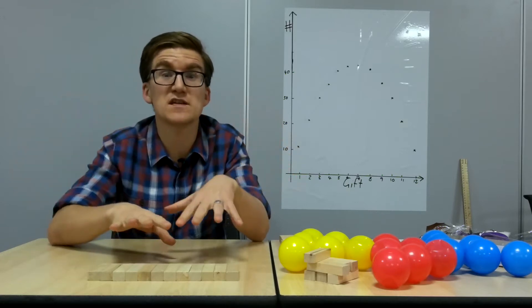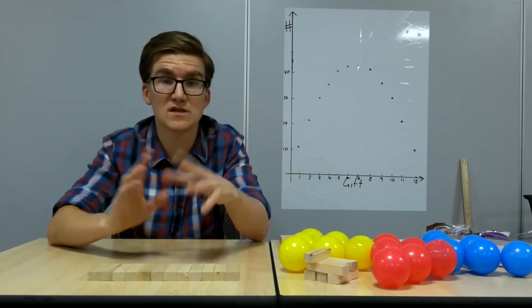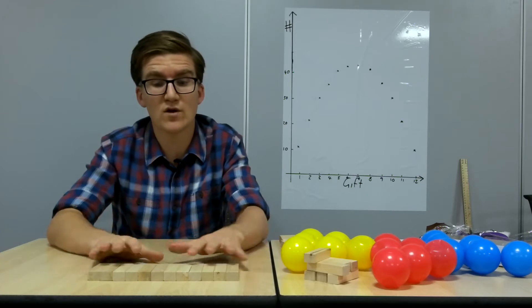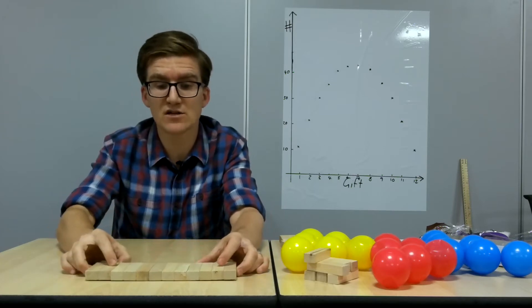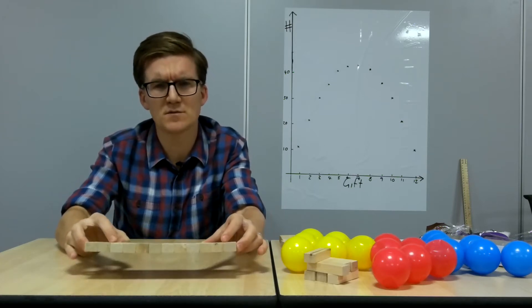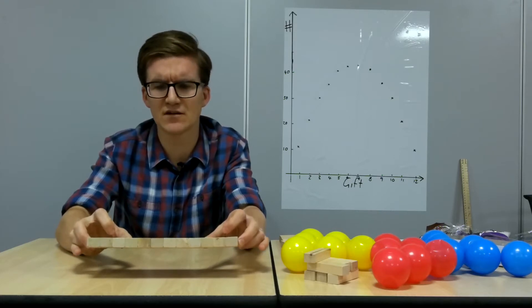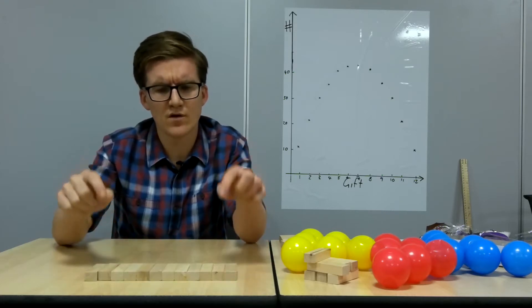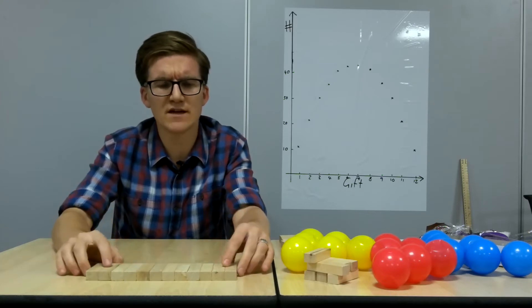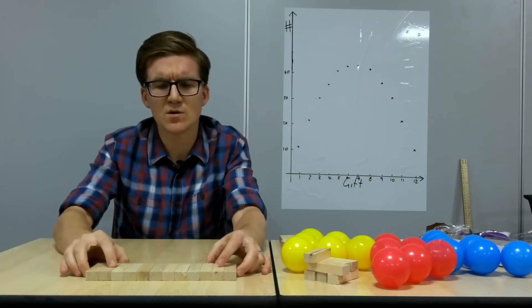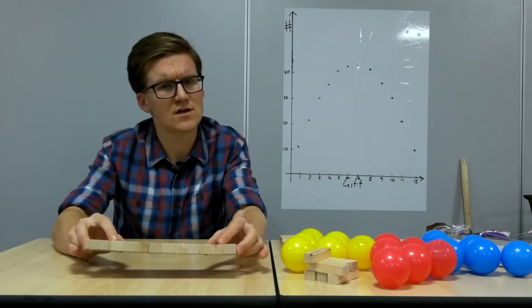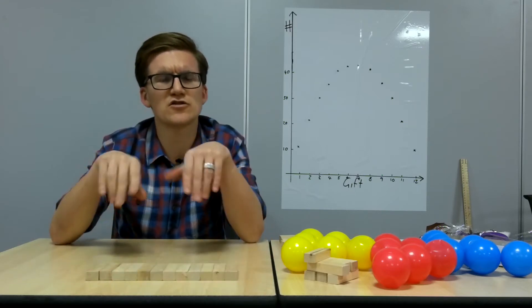Now you might be tempted to go for partridges in a pear tree, because you get one of those every day. So what I've got here is a little rectangle. If you imagine each of these as a gift, because I'm a mathematician, all the gifts can look the same. The block just represents a gift. So what we've got here is 12 lots of one, a rectangle that's one by 12. So over the whole 12 Days of Christmas, you get 12 partridges in pear trees.